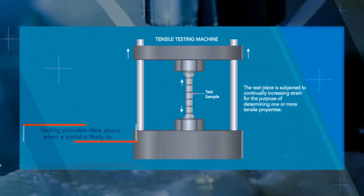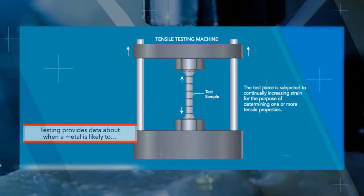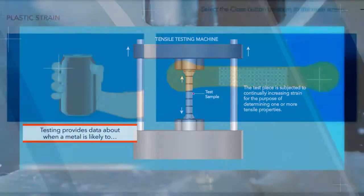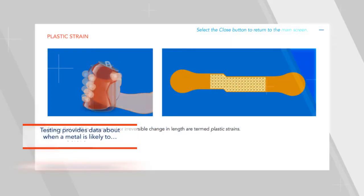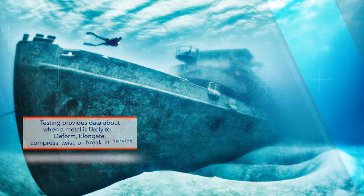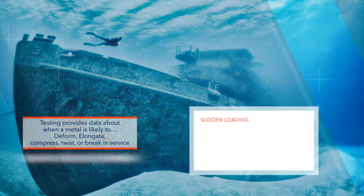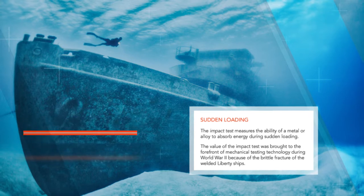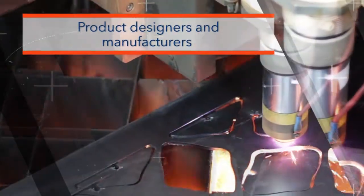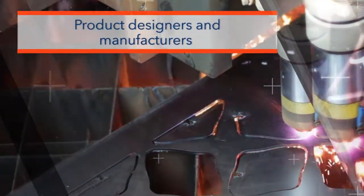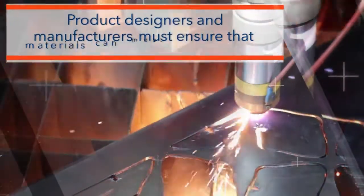Such testing provides data about when a metal is likely to deform, elongate, compress, twist, or break in service. Product designers and manufacturers must ensure that materials can meet their performance requirements and satisfy all applicable specifications.